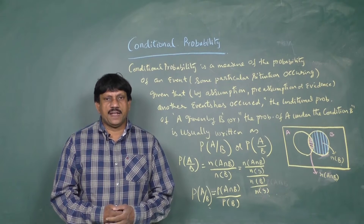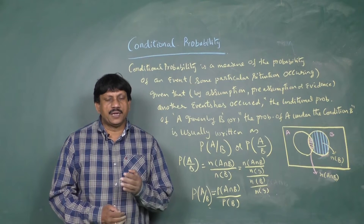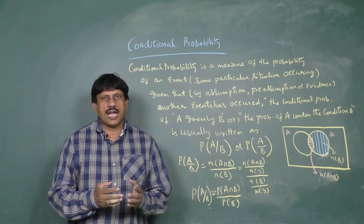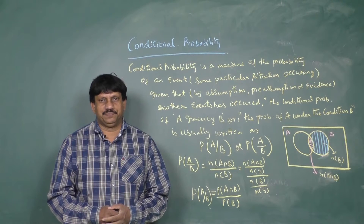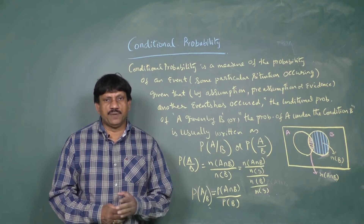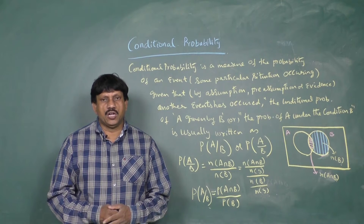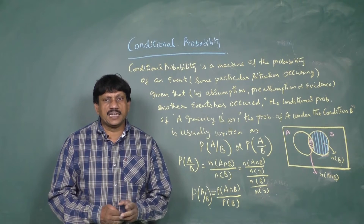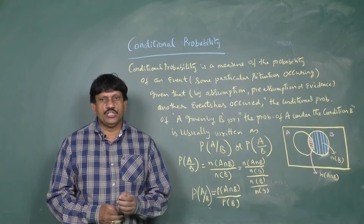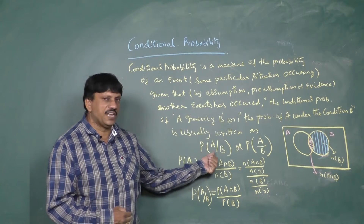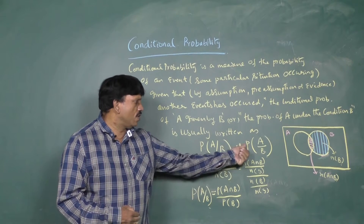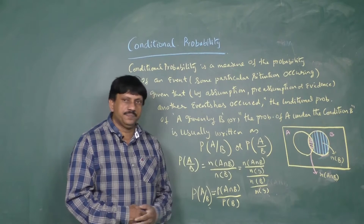If the event of interest A and the event B is known or assumed to have occurred, the conditional probability of A given B — or the probability of A under condition B — is usually written as P of A given B, or P of A divided by B.